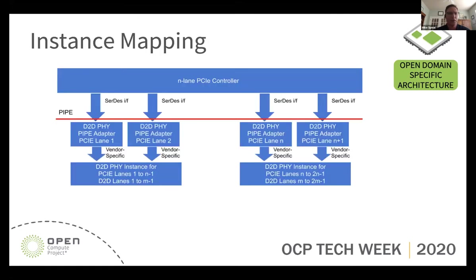This slide shows the one-to-one interface mapping concept — basically it won't be there. For example, on a BOW interface, a PCI lane is likely going to map to four BOW lanes at Gen 4 rate. So you'll have a D-to-D PHY that may need to merge multiple PCI lanes into the same D-to-D lanes or slices, or vice versa — there are some challenges with that. Yet the pipe adapter is defined as a per-PCI-lane interface through the red line.